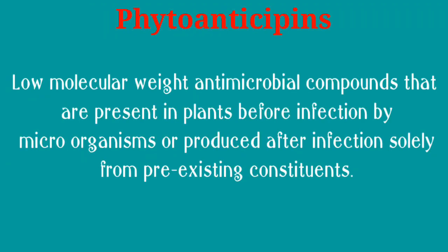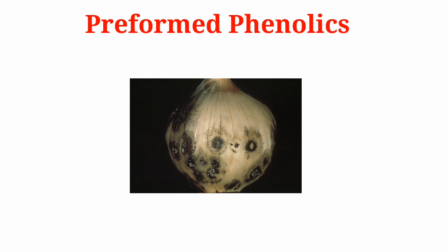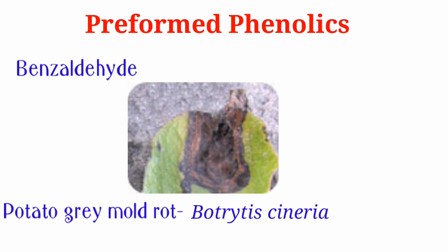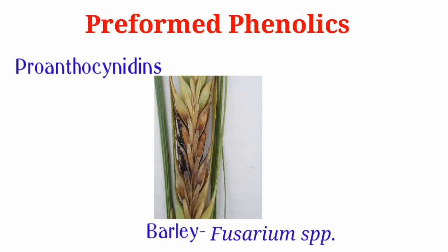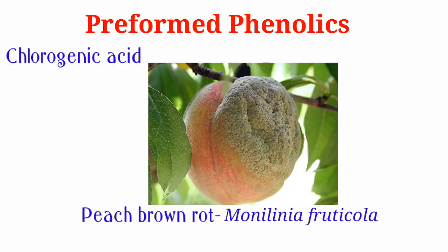Phytoanticipants are low molecular weight antimicrobial compounds that are present in plants before infection by microorganisms, or produced after infection solely from pre-existing constituents. Examples of preformed phenolics: catechol and protocatechoic acid found in onion are effective against onion smudge caused by Colletotrichum circinans; benzaldehyde in potato controls Botrytis cinerea which causes grey mould rot; proanthocyanidins in barley control Fusarium species; phypentadecyl resorcinol in mango is effective against Alternaria alternata; and chlorogenic acid in peach controls Monilinia fructicola which causes brown rot of peach.